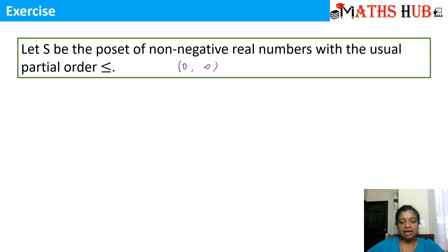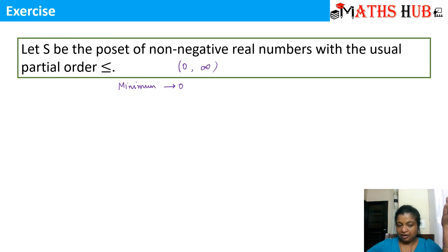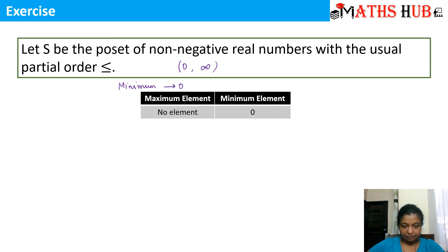Let's move on to the next exercise. The minimum element will be 0, and since the poset is going to infinity, there will be no maximum element.